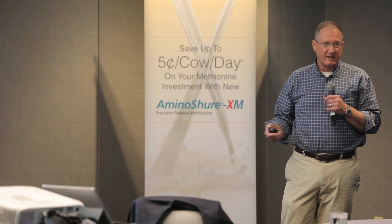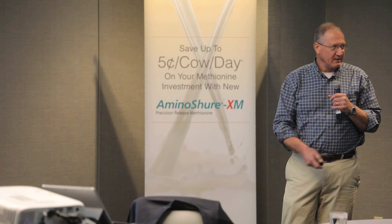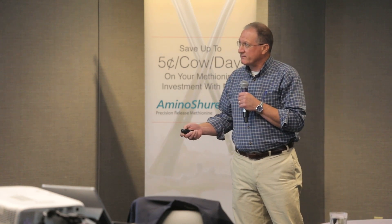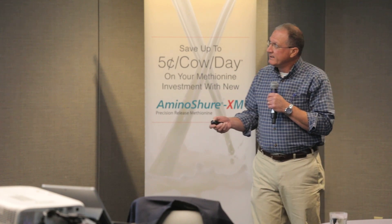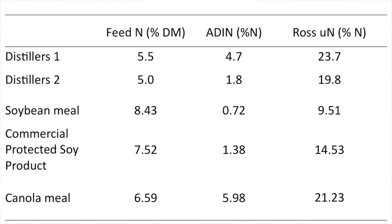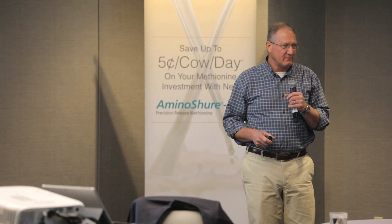Distillers — I can't find enough; Andrew was helping me look for data. Debbie has a very funny filing system and we couldn't find everything. But here are a couple of distillers: 5.5% nitrogen, 1.8 to 4.7 ADIN. We're getting 20 to 24% unavailable nitrogen coming out of those two. That's pretty typical distillers — we've seen it as high as 45% unavailable nitrogen, as low as about 12%.